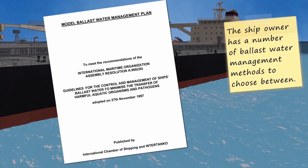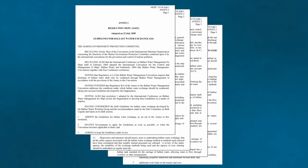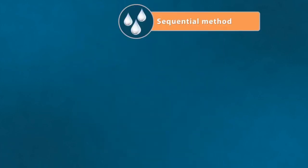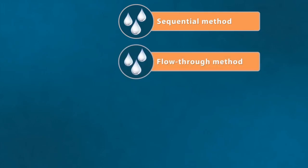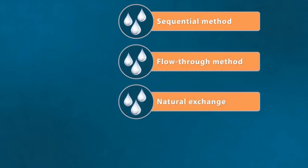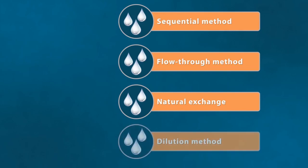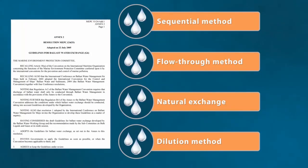The G6 guidelines for ballast water exchange describe three different main methods: the sequential method, the flow-through method (of which the natural exchange method can be considered a special case), and the dilution method. Each method has advantages and disadvantages. The G6 guidelines provide detailed advice on safety precautions to be observed during the exchange.